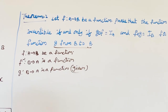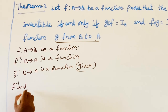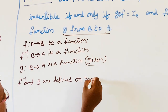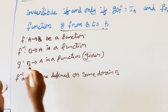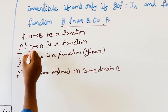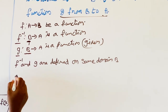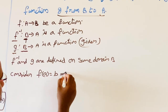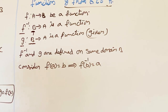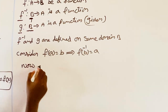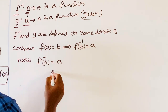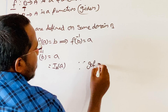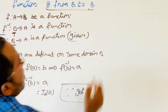F inverse and G are defined on the same domain B. Consider F(A) equals B, which implies F inverse(B) equals A. Now, since we know G∘F equals I_A, I_A means G∘F(A).